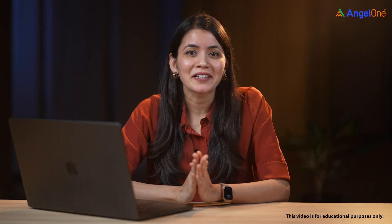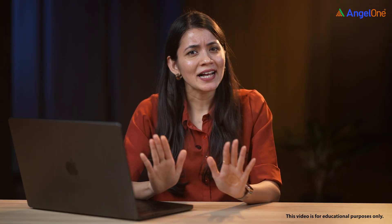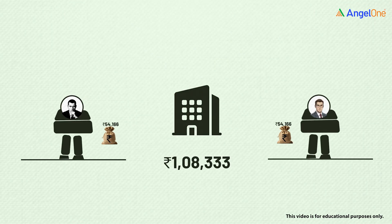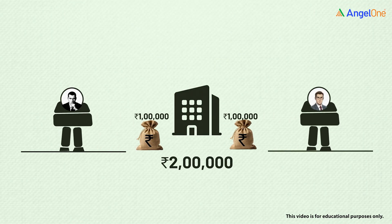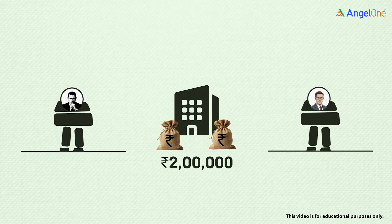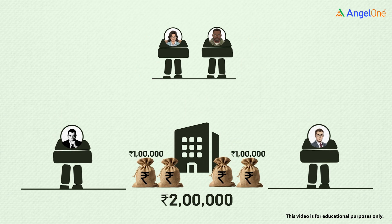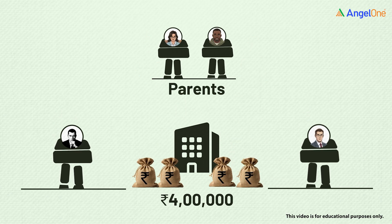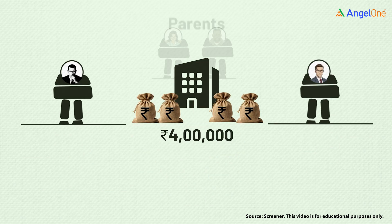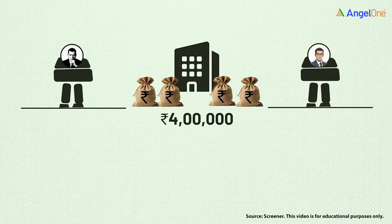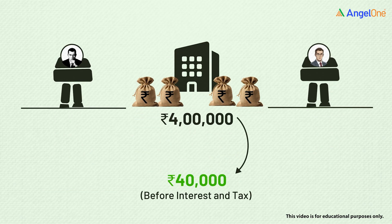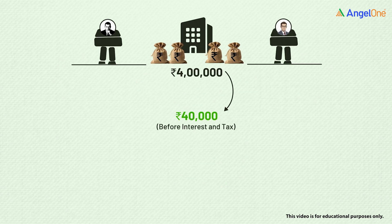Let me break it down with a simple example. You start a business with your friend — each of you puts in 1 lakh rupees, but that seems insufficient, so you borrow another 2 lakh rupees from your parents. Your total capital now becomes 4 lakh rupees. At the end of the year, your business makes a 40,000 rupee profit before interest and tax.